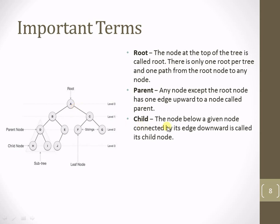The next term is child node. A child node is the node below a given node, connected by its downward edges. So D is the parent node with two downward edges connecting to H and I, making H and I the child nodes of D. Similarly, D and E are the child nodes of parent B, and F and G are the child nodes of parent C.